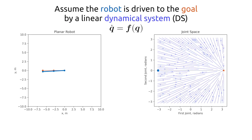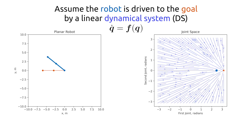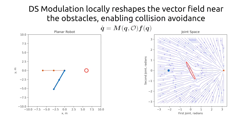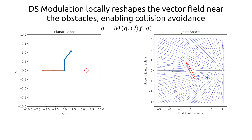Let's assume that robot motion is governed by a dynamical system. In this example it's a linear dynamical system attracting the robot state to a given configuration. The framework of dynamical system modulation allows to locally reshape the vector field near the obstacles, allowing collision avoidance while still reaching the goal.